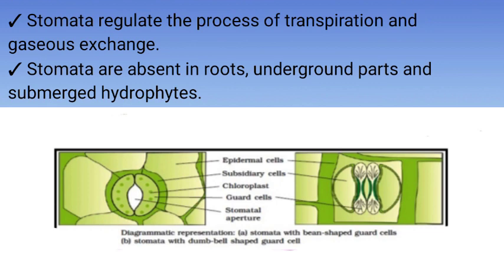Let's see the diagrammatic representation of stomata. The first diagram shows stomatal aperture in dicotyledonous plants with kidney-shaped or bean-shaped guard cells. The second diagram shows the monocotyledonous plant stomatal aperture, because it contains dumbbell-shaped guard cells.